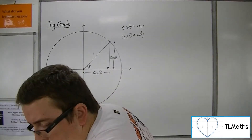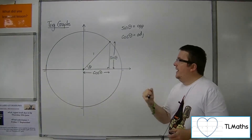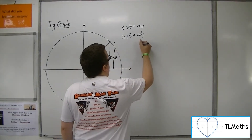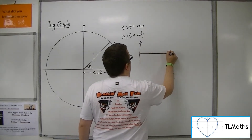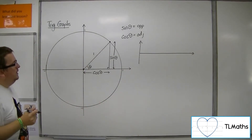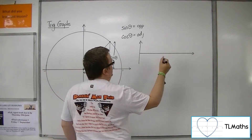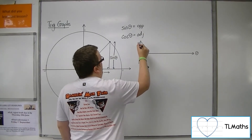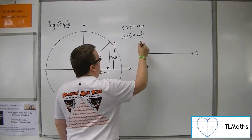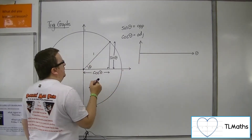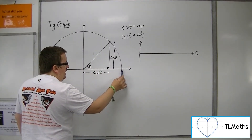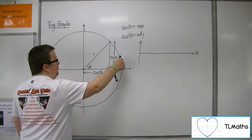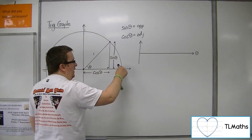Now, if we just observe what's going to happen to sine as the angle theta changes, we can plot the results. When theta is 0 — and this represents the height of the triangle — the height of the triangle will be 0, because at that point, imagine that I can move that point around the circle, the height of the triangle will be 0.